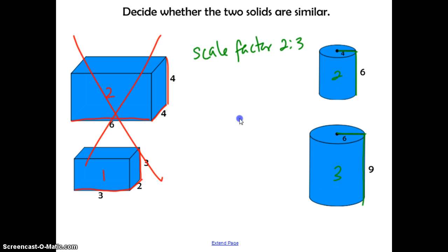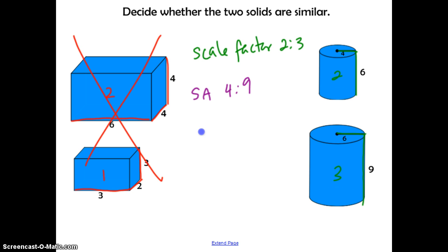Let's talk about what happens with the surface areas and volumes of those cylinders. Their surface area will have a ratio of 2 squared to 3 squared, which is 4 to 9. Their volume will have a ratio of 2 cubed to 3 cubed, which is 8 to 27.